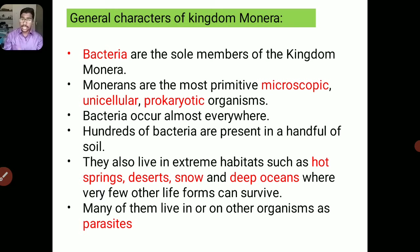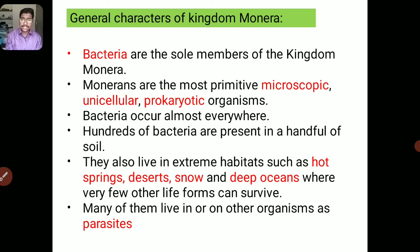The bacteria occur almost everywhere. They are present in hot springs, salty areas, and marshy areas. Hundreds of bacteria are present in a handful of soil. They live in extreme habitats such as hot springs, desert, snow, and deep oceans — where only few life forms can survive. So they exhibit a variety of habitats. Many of them live in or on other organisms as parasites. These are the disease-causing organisms.